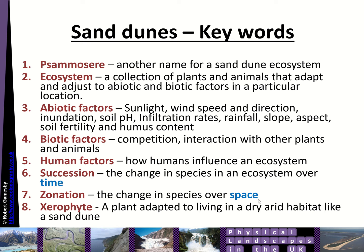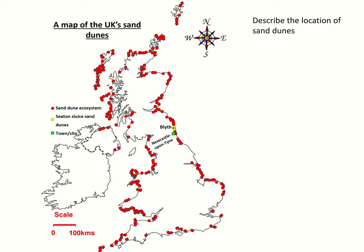Zonation is the change in species over space, which we'll have a look at. A xerophyte is a plant adapted to living in dry, arid habitats like sand dunes. Even in the UK, a lot of the plants on sand dunes have to adjust to having very little water, because sand allows water to soak through it very quickly. We have lots of sand dunes all over the UK.